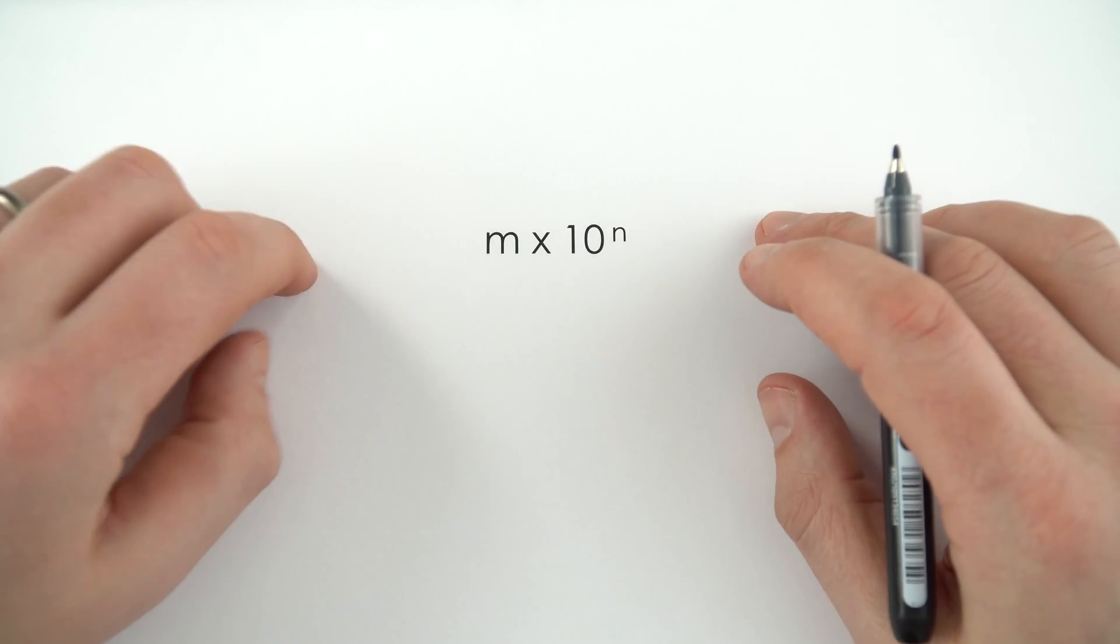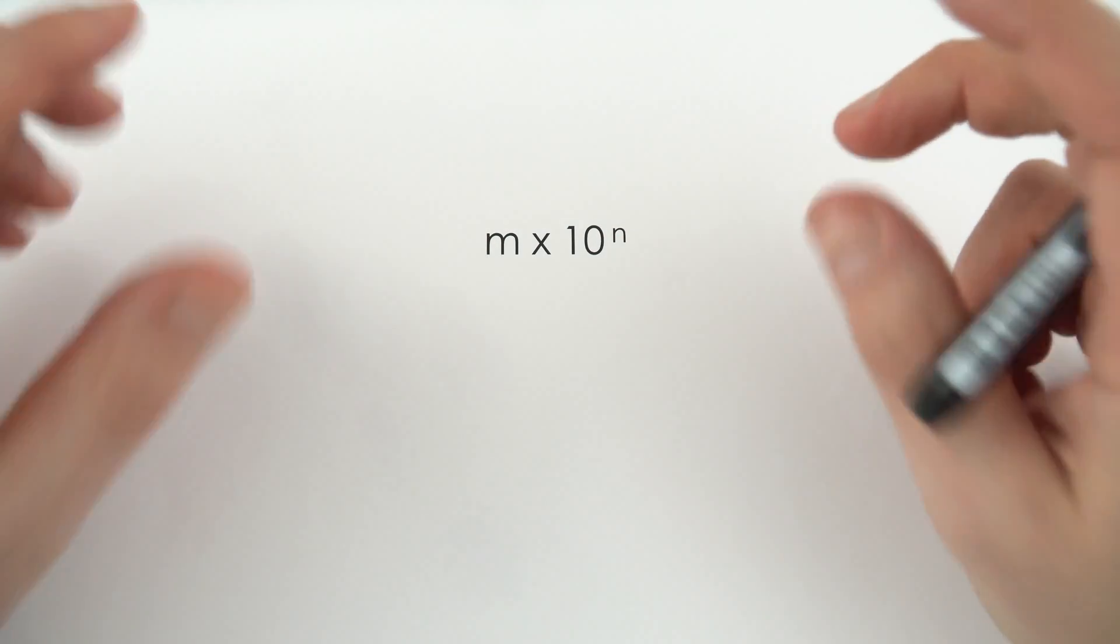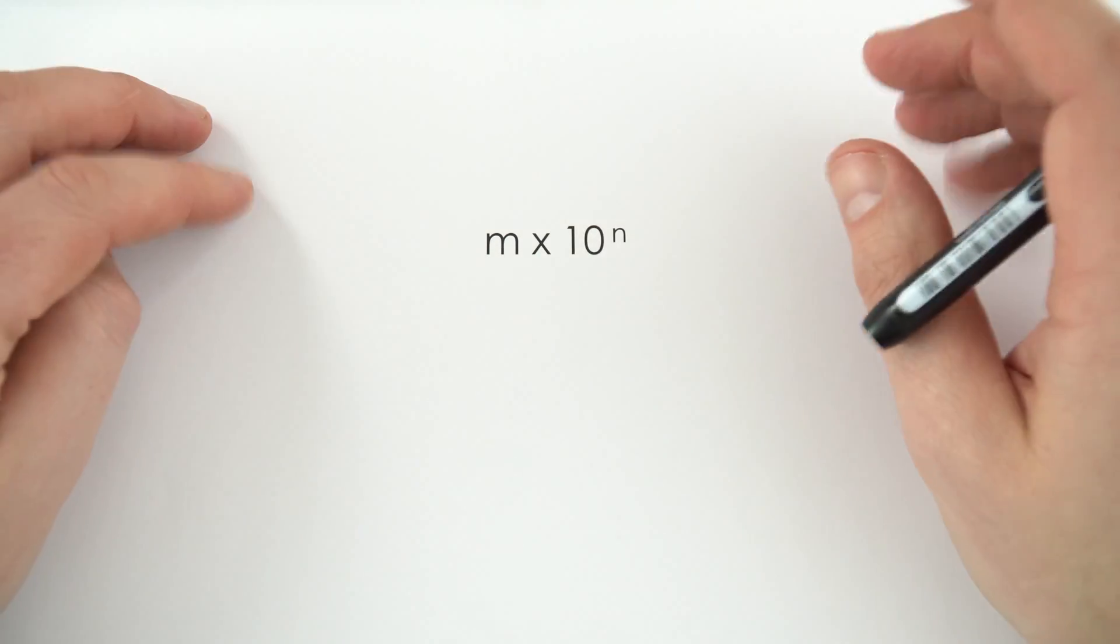Now numbers which are displayed in this format of m times 10 to the n are what we call standard form, and it's a really useful thing to get used to when it comes to physics.